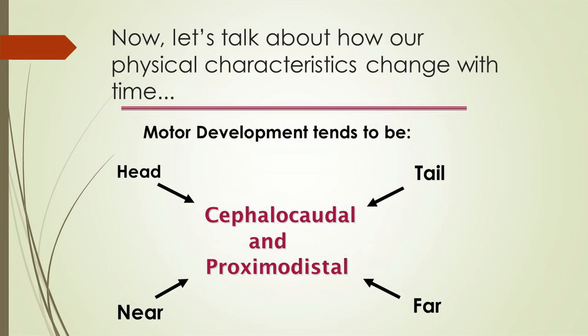Let's talk about the term proximodistal, or near to far. The near part of your body is the central part — if you imagine drawing a line from the middle top of your head straight down to the floor, near the center of that line, the midline of your body, is proximo or near. As you move out towards your fingers and toes, it's distal or far. Essentially, motor development occurs in a near to far fashion.